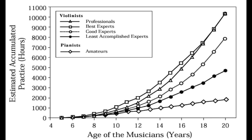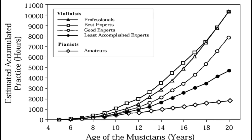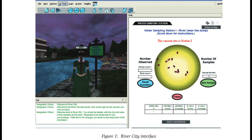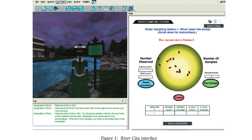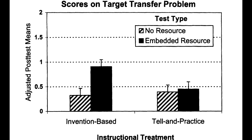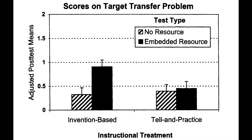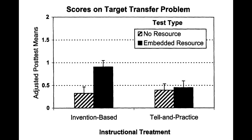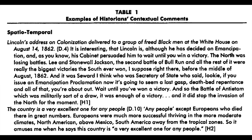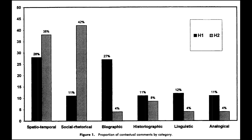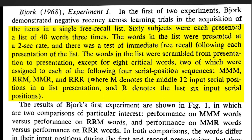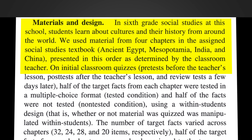Researchers also use a variety of different methods. There are longitudinal studies where researchers follow learners over a long period of time as they get better at something. There is design-based research where researchers will design a learning experience and test it out among different people and then iterate on that over time to improve it. There are experimental studies where one group goes through a learning experience and another group goes through a different one, and you get to look at the outcomes.